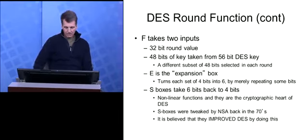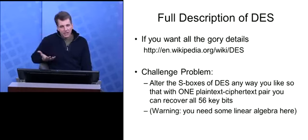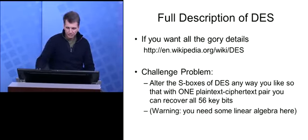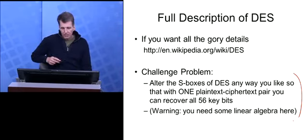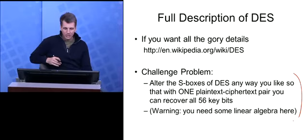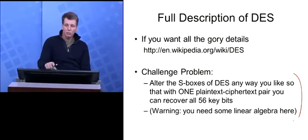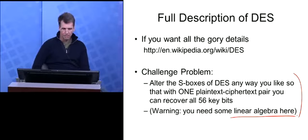There are more details — in particular, how do you get the 48-bit round key out of the master key? That's the key scheduling algorithm. You can look it up if interested. If you want to do the challenge problem — replace the S-boxes with a dumb S-box, then given plaintext-ciphertext pairs, break the key using math rather than exhaustive search — I will give extra credit. It's hard. You shouldn't do it unless you've finished all other schoolwork. You should also know linear algebra, like how to do Gaussian row reduction.